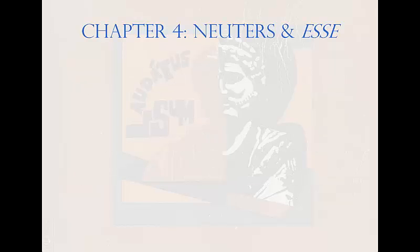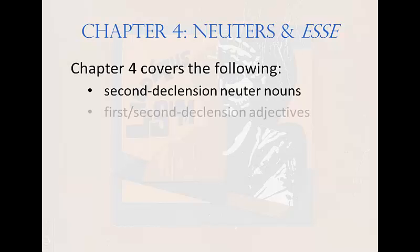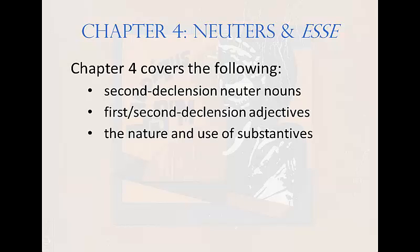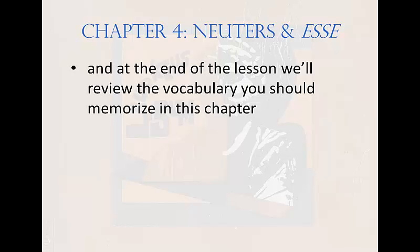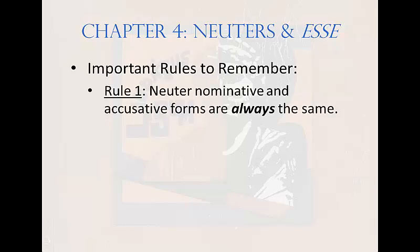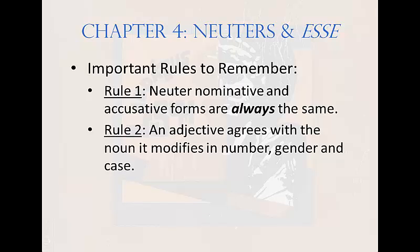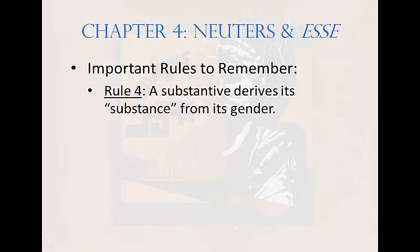Chapter four covers the following: second declension neuter nouns, first and second declension adjectives, the nature and use of substantives, the present tense of sum esse, the Latin verb to be, predicate nouns and adjectives, and at the end of the lesson we'll review the vocabulary. There are four important rules to remember. Rule one: neuter nominatives and accusative forms are always the same. Rule two: an adjective agrees with the noun it modifies in number, gender, and case. Rule three: the base of the Latin verb esse is es or sometimes su. Rule four: a substantive derives its substance from its gender.